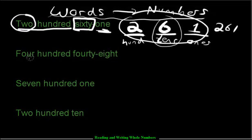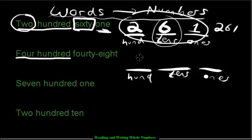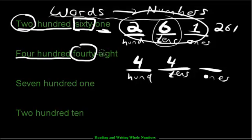Looking at the next number, 448. So again, we do ones, tens, hundreds. You can say four hundred — it goes in the hundreds spot. Forty — where does forty go? It goes in the tens spot because four tens is forty. And then eight in the ones spot. So you get 448.